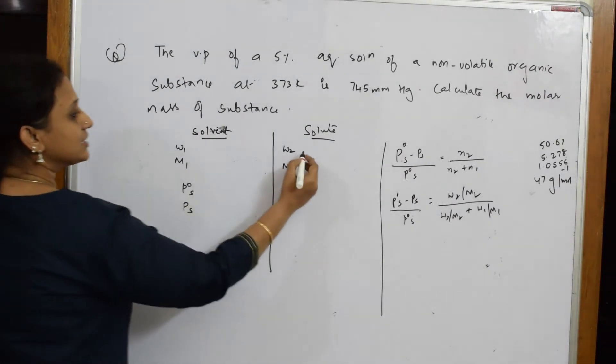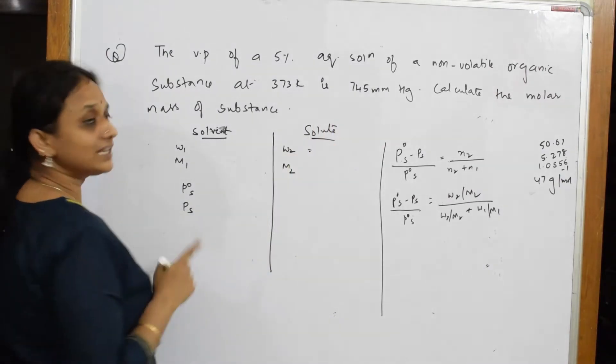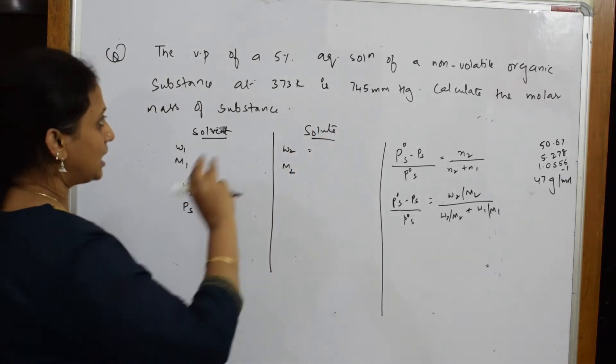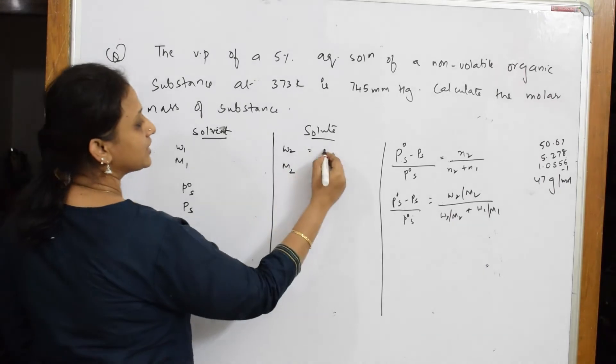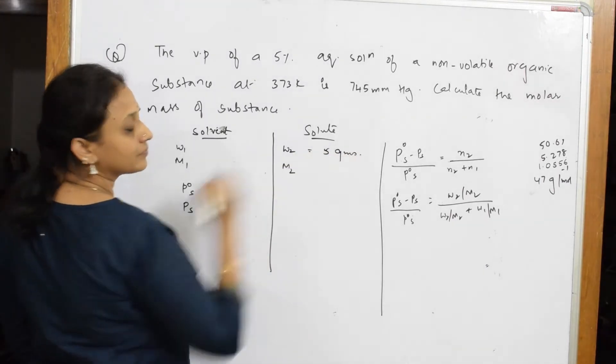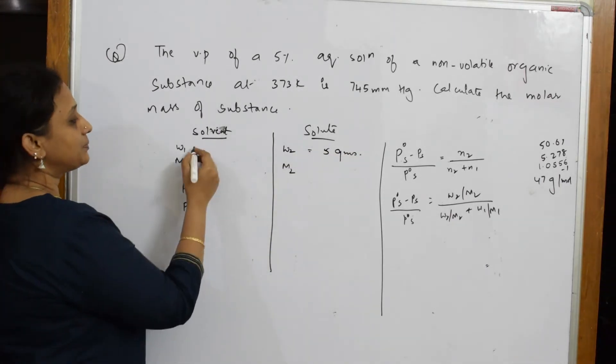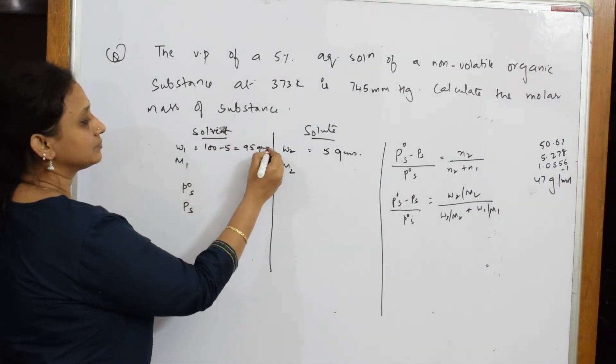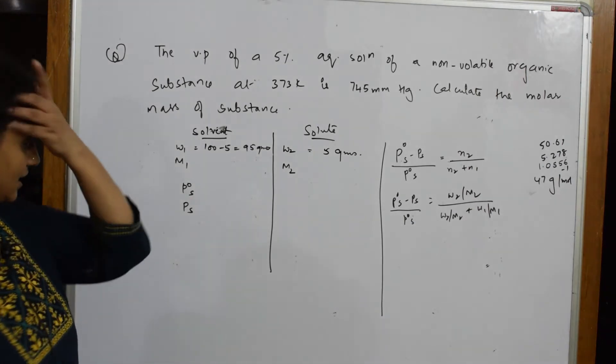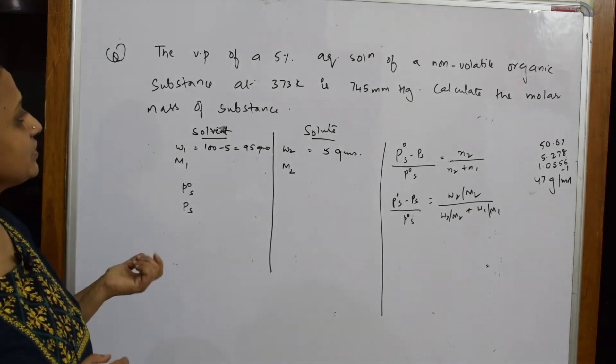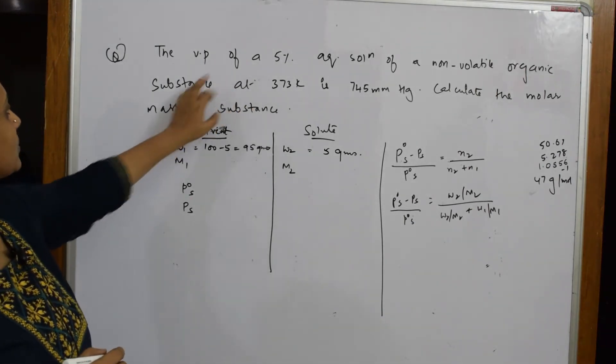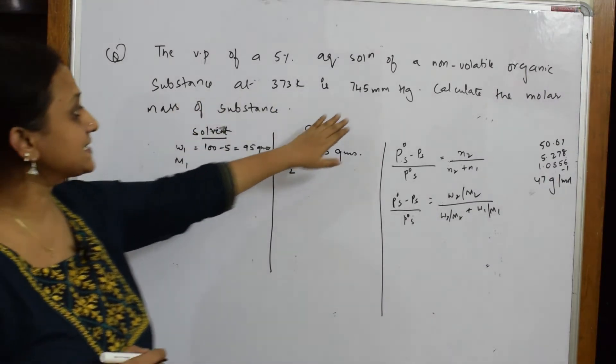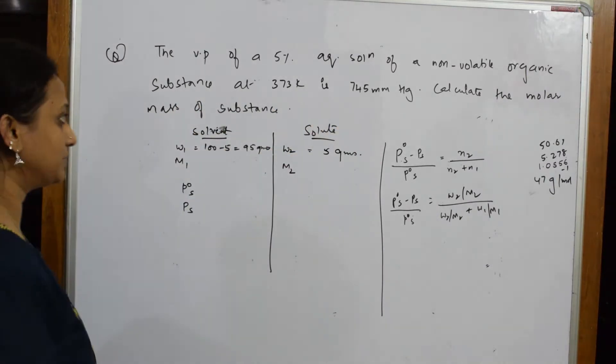So they said there's a non-volatile organic substance. Among that, five percent is five grams of this present in hundred percent, so 95 grams is your solvent. Done. Then after that, let's see whether they've given anything else. First part is over. Substance at 373 kelvin is 745 mm mercury.